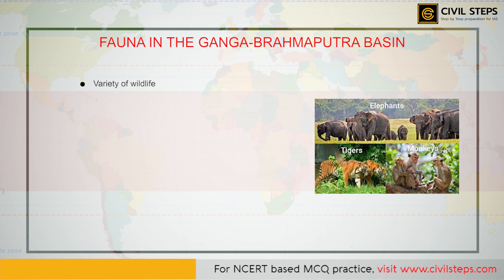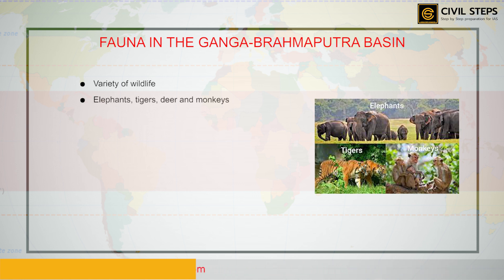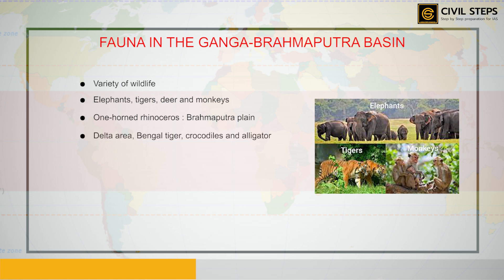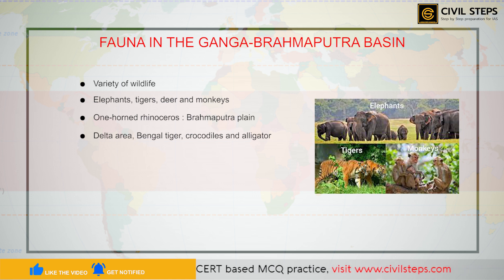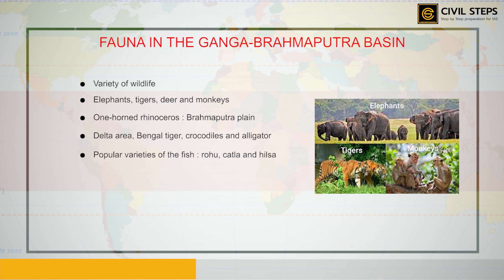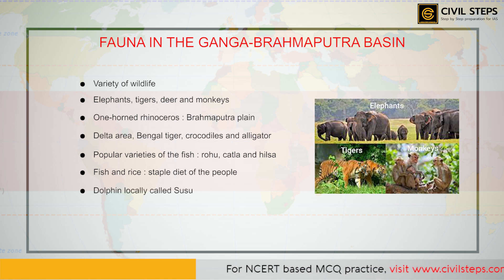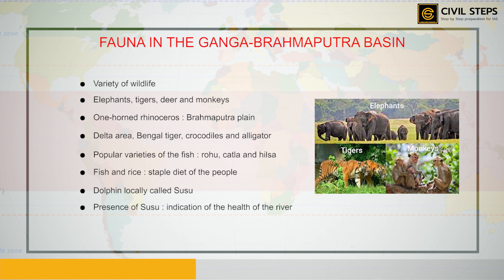There is a variety of wildlife in the basin. Elephants, tigers, deer, and monkeys are common. The one-horned rhinoceros is found in the Brahmaputra plain, and in the delta area, the Bengal tiger, crocodiles, and alligators are found. Aquatic life abounds in the fresh river waters, lakes, and the Bay of Bengal. Popular fish varieties include rohu, katla, and hilsa — fish and rice are the staple diet of the people here. In the fresh waters of the Ganga and Brahmaputra, the blind dolphin, locally called susu, is found — its presence indicates the health of the river, though untreated industrial and urban waste is killing this species.